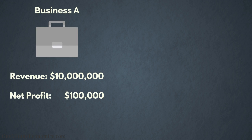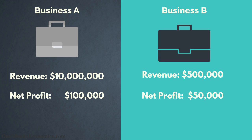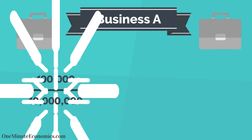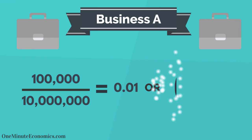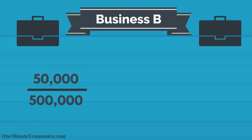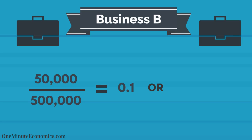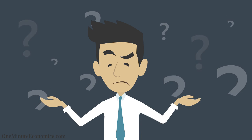Let's say Business A generated 10 million dollars last year but was only left with a net profit of 100 thousand dollars. Business B, on the other hand, generated 500 thousand dollars last year and was left with a 50 thousand dollar net profit. We divide 100 thousand by 10 million for Business A and end up with 0.01, or a net profit margin of 1%. For Business B, 50 thousand divided by 500 thousand is 0.1, or a net profit margin of 10%.